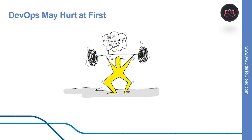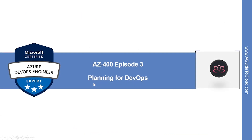If DevOps hurts, do it more often. Just like going to the gym, adopting new practices is likely to hurt at first. The more often you exercise the new practices, the easier they will become. And just like training at the gym, where you exercise large muscles before small muscles, adopt practices that have the greatest impact first and cross-train to develop synergy. That concludes our first lesson. In the next episode, we're going to learn about planning for DevOps — I will see you on the next one.